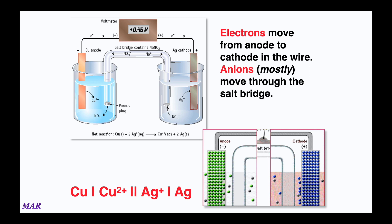One interesting thing here: in the last example, zinc was going to zinc 2+ and copper 2+ was being turned into copper. In this new reaction, copper is being turned into copper 2+, so electrons are flowing away from the copper. The electrons go through the circuit to the silver side, where silver + is becoming silver metal. The excess anions on the silver side travel through the salt bridge over to the copper 2+ side. Notice that copper's role is reversed compared to the previous example.